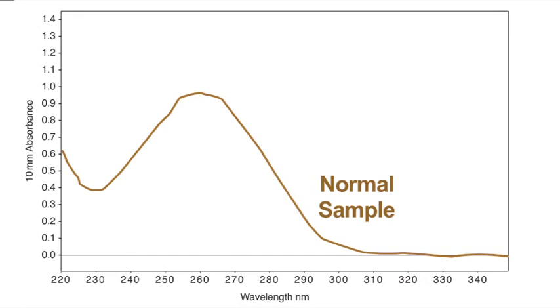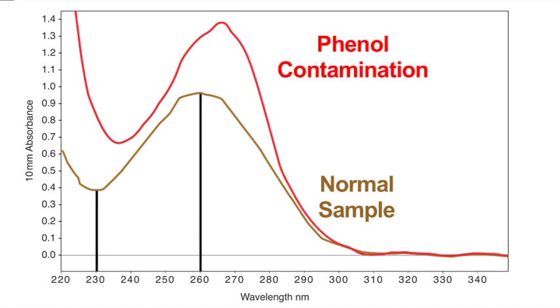Spectral indicators of a poor quality sample include wavelength shifts in the trough and in the 260-nm peak.